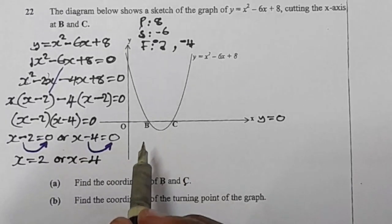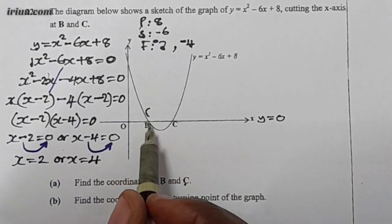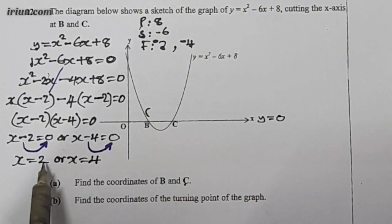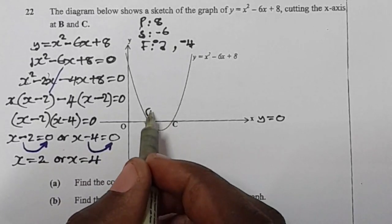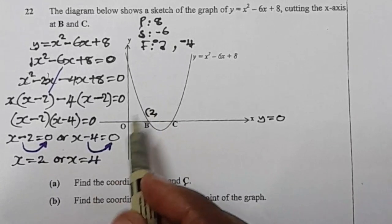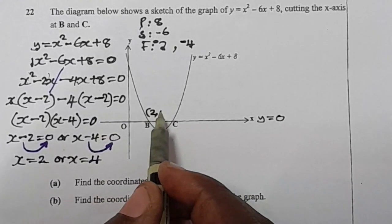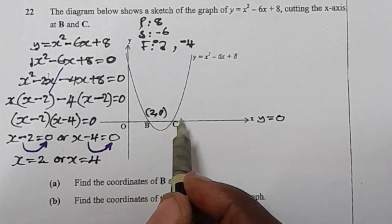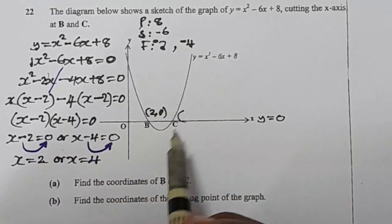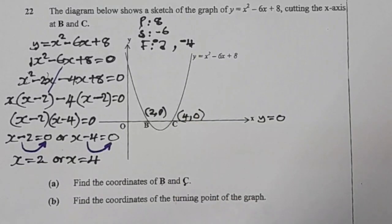Now, the x value at b, which is the smaller value, is 2. Remember we said along the x-axis the value of y is 0, so b is (2, 0). Then here at c we have (4, 0).